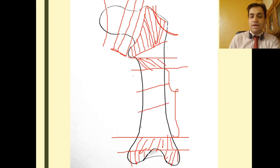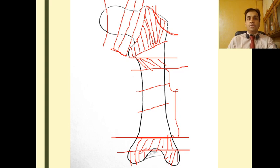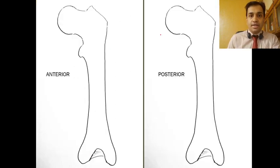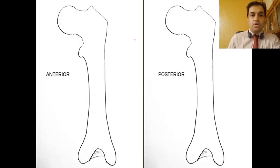The shaft can be divided into upper one-third, middle one-third, and distal one-third. These are all the fractures around the hip joint. Before going further, let us look at the attachment of the hip joint capsule.